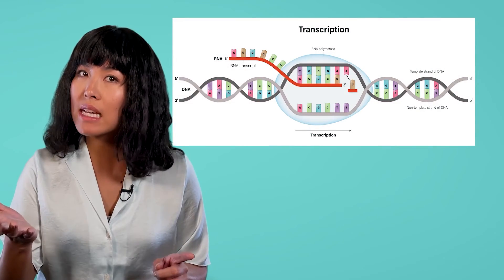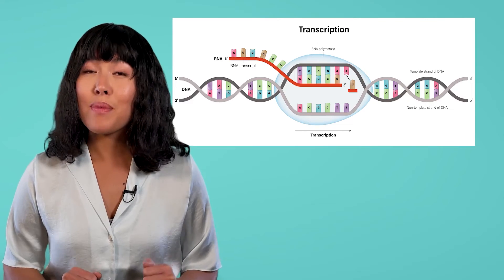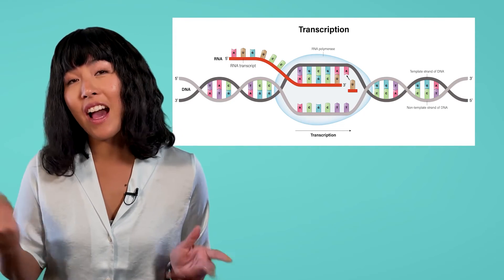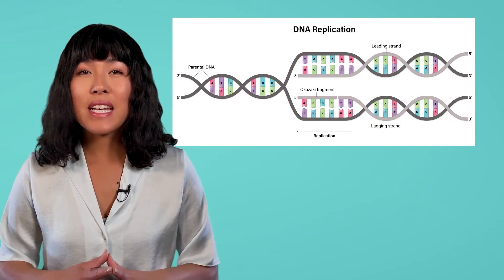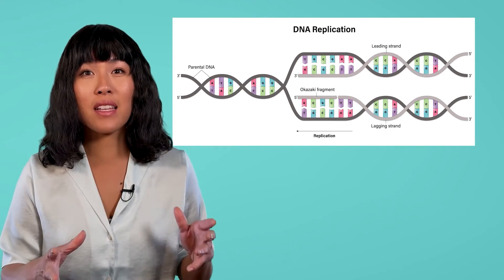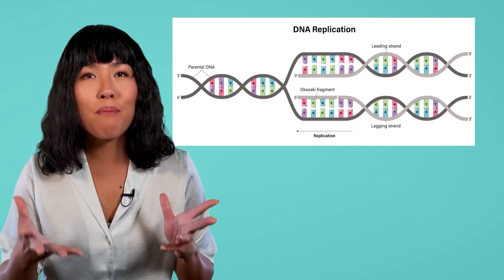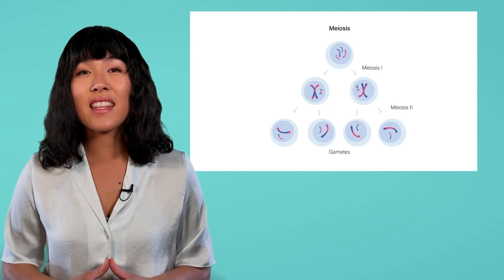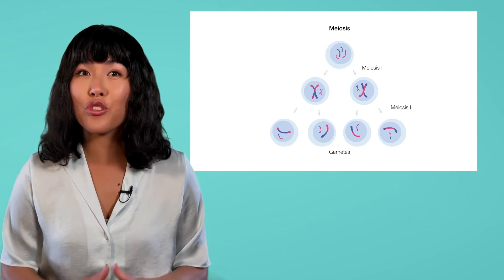Mutations can happen at many different times during the life cycle of a cell, and some times are more significant than others. If a mutation occurs during transcription instead of replication, the mutation will only affect the one protein molecule being made at that specific time, because mRNA molecules are temporary and will be discarded after a single use. Mutations during replication are more significant, because every protein made from that DNA strand will be made with the mutation, and every cell copied from that cell will have this same mutated DNA. Possibly the worst time for a mutation to occur is during meiosis, because this will be the only copy of DNA that the offspring receives from their parent, and if that copy is altered, the new organism will not have any standard copies at all.